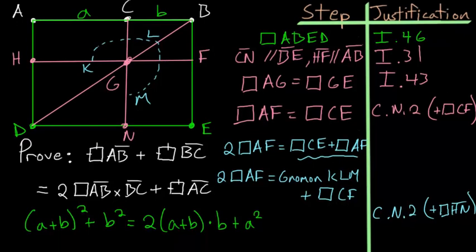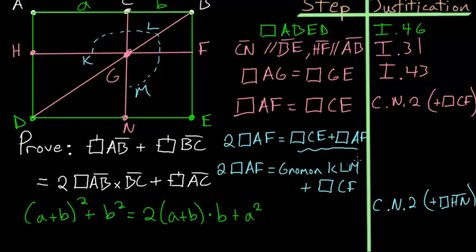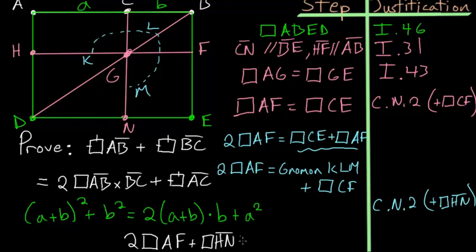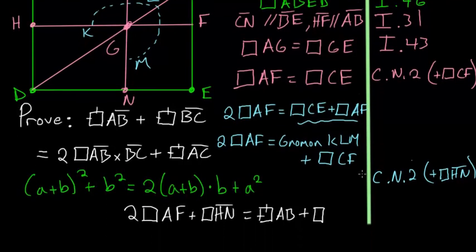When we add HN to the gnomon KLM, we're adding the final piece of the big square, so the right-hand side becomes just the entire square on line AB. Rewriting: twice parallelogram AF plus square HN equals the square on line AB plus square CF. And CF is just the square formed by line BC — the square contained by line BC.